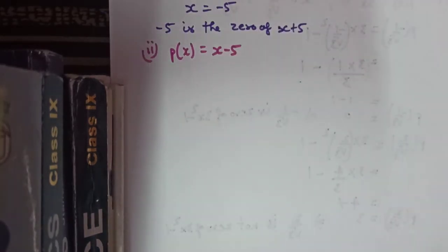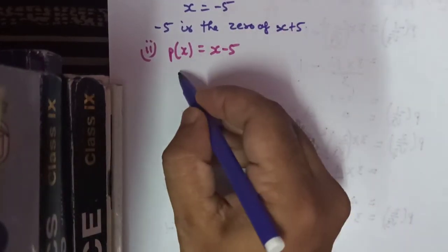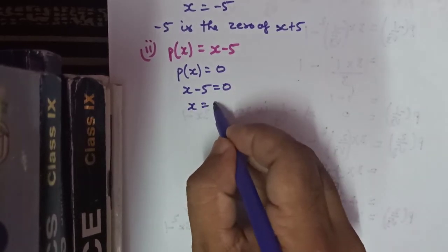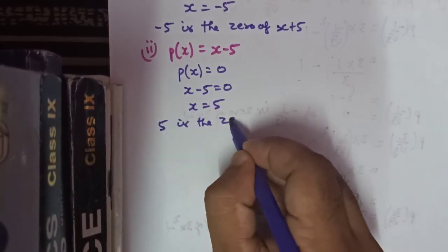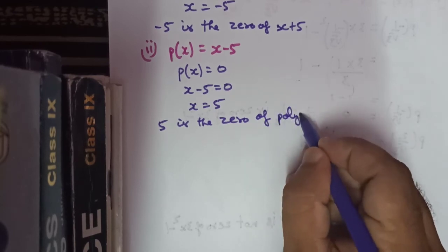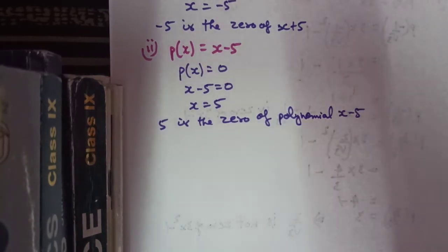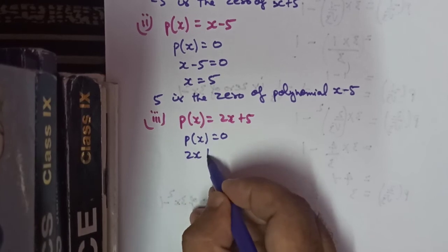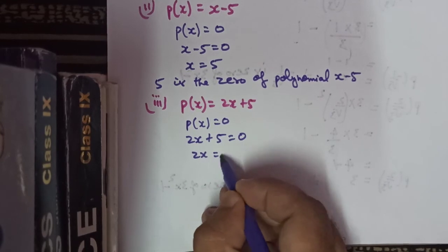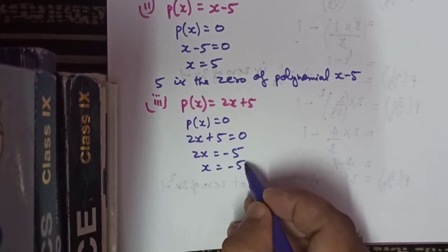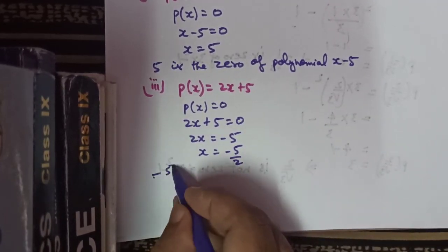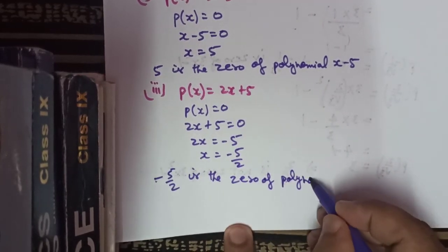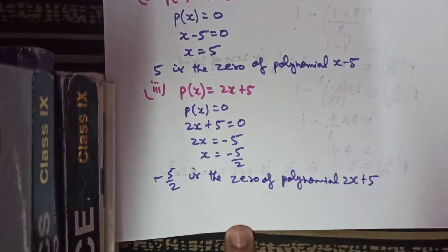For the second part, polynomial is x minus 5. Equating to 0: x minus 5 equals 0, so x equals plus 5. Therefore 5 is the zero of polynomial x minus 5. In the third part, polynomial is 2x plus 5. Setting 2x plus 5 equals 0: 2x equals minus 5, so x equals minus 5 upon 2. Therefore minus 5 upon 2 is the zero of polynomial 2x plus 5.